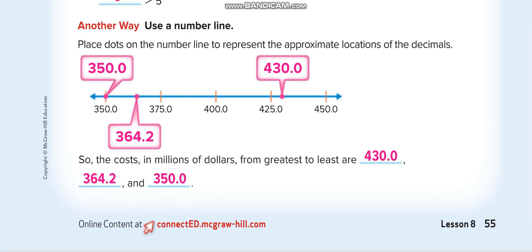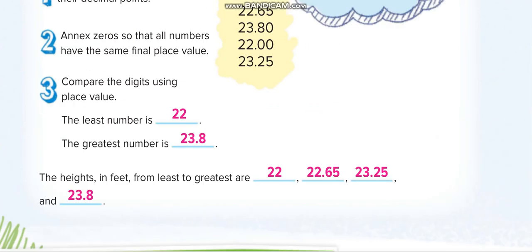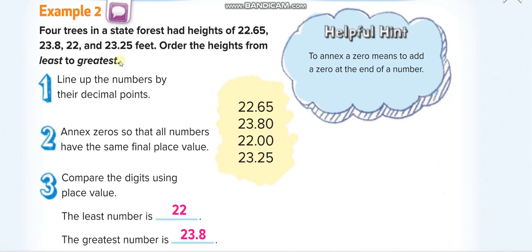Moving to the next page, Example 2: four trees in a state forest had heights of one, two, three, and four values. Order the heights from least to greatest. You can see the values are 22, 22, 23, and 23 — specifically 22.0, 22.65, 23.25, and 23.80.